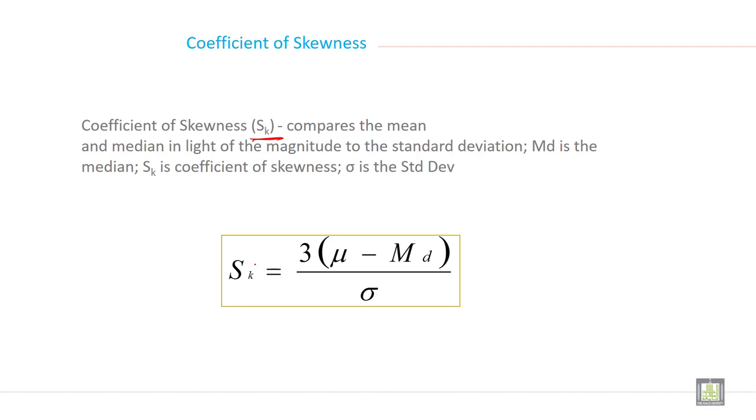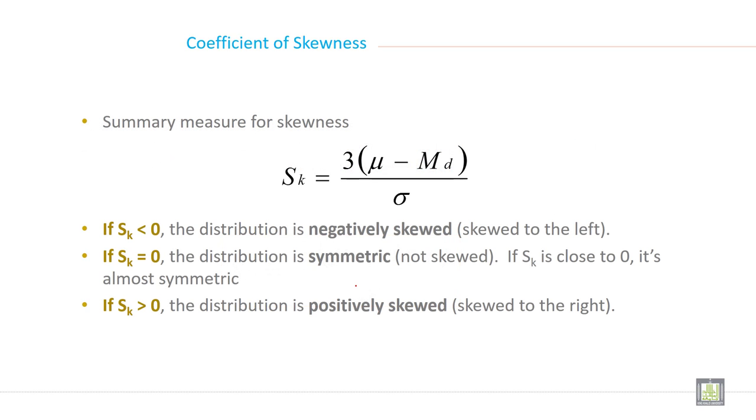Sk is equal to skewness equals 3 times mu minus median divided by standard deviation. This is the formula to calculate coefficient of skewness.